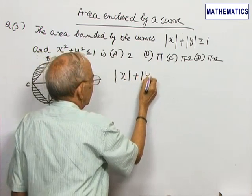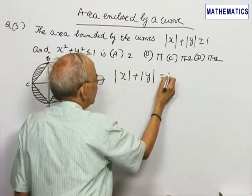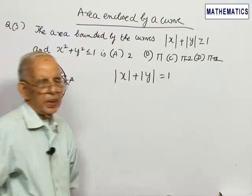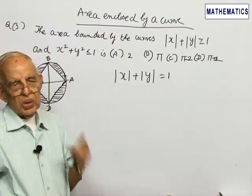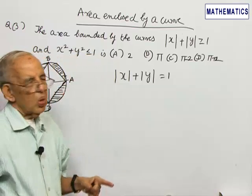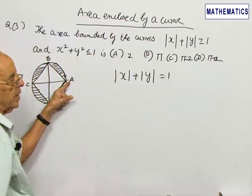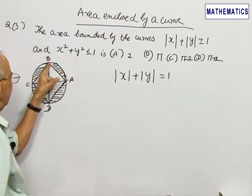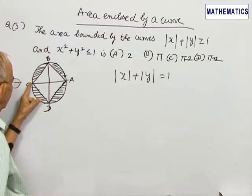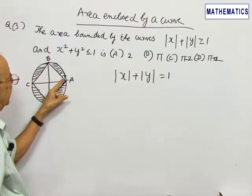If you take |x| + |y| = 1, this will represent 4 straight lines: AB, BC, CD, and DA.